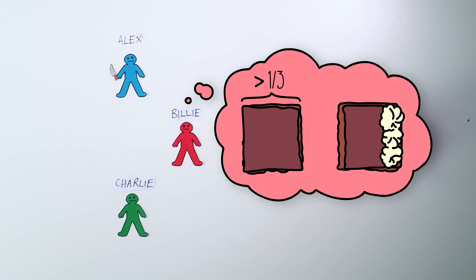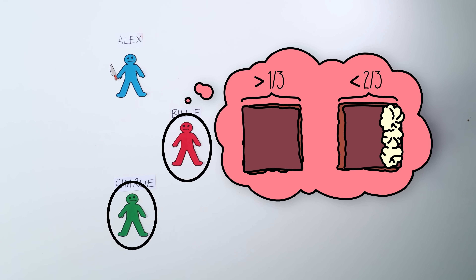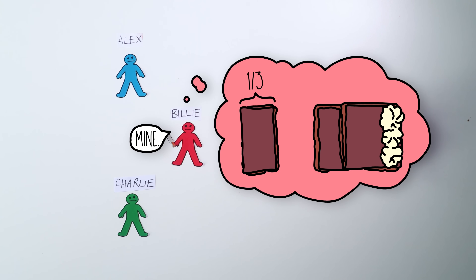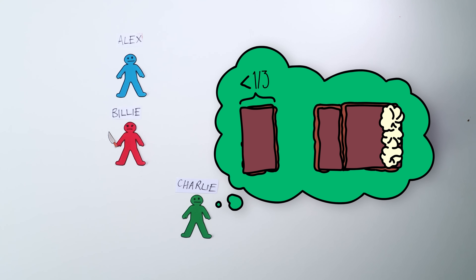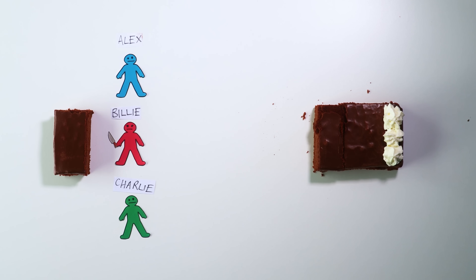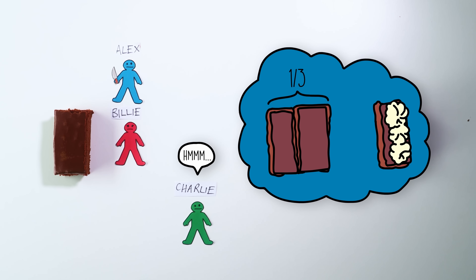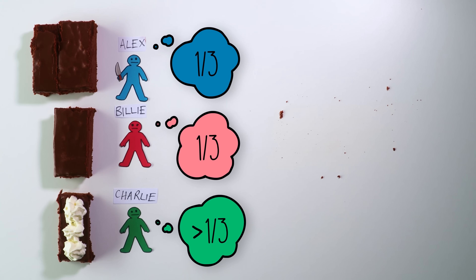Alex cuts what he thinks is exactly one third of the cake for himself. Then Billy examines the piece. If she thinks it's worth equal to or less than one third, she passes it along unchanged. If she thinks it's worth more than one third, that's a problem — Billy wants to guarantee she gets at least one third of the whole cake. So Billy trims the piece to what she believes is exactly one third and lays claim to it. The excess trimming is added back to the cake. We repeat the process with Charlie. Charlie examines the piece and decides it's worth less than one third, so he passes. Billy, the last diminisher of the piece, gets to keep it. We repeat with the remaining players and cake until everyone thinks they got at least one third.